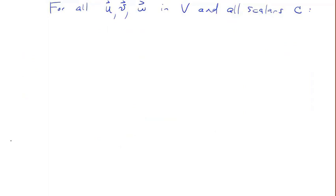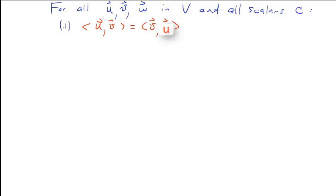For all u, v, and w in the vector space and all scalars c. Property one: the inner product of u and v is equal to the inner product of v with u. In other words, you can switch the order, and we call this property commutativity, or the commutative property.